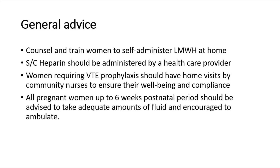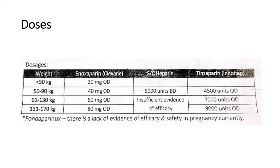The dosage is given based on the patient's weight. For those less than 50 kg, give subcutaneous enoxaparin 20 mg once daily. For 50–90 kg, give 40 mg once daily. For those higher than 90 kg, give 60 mg once daily.